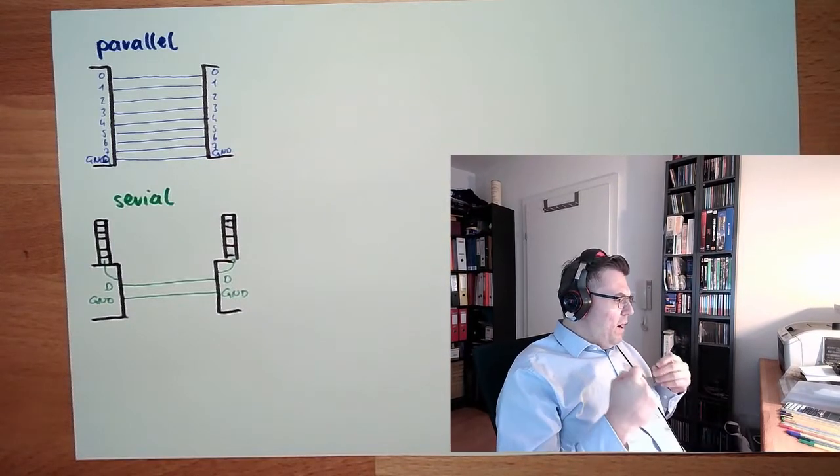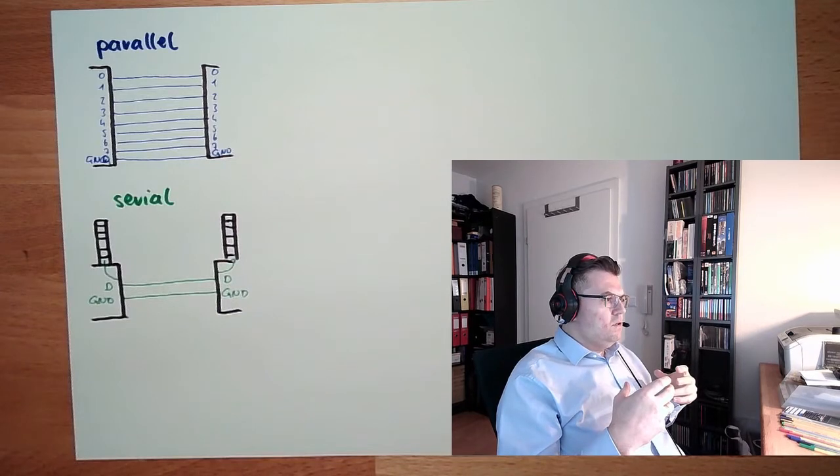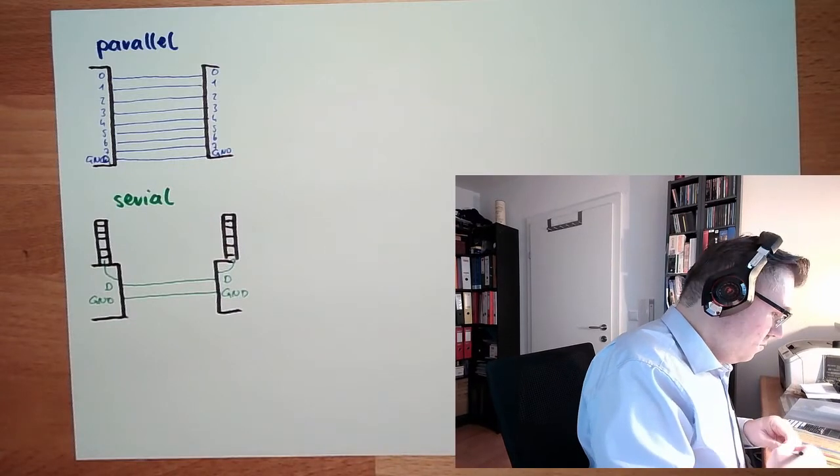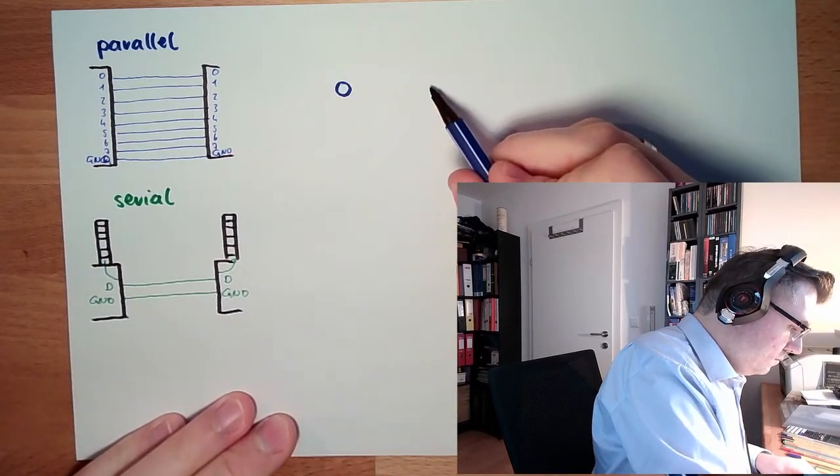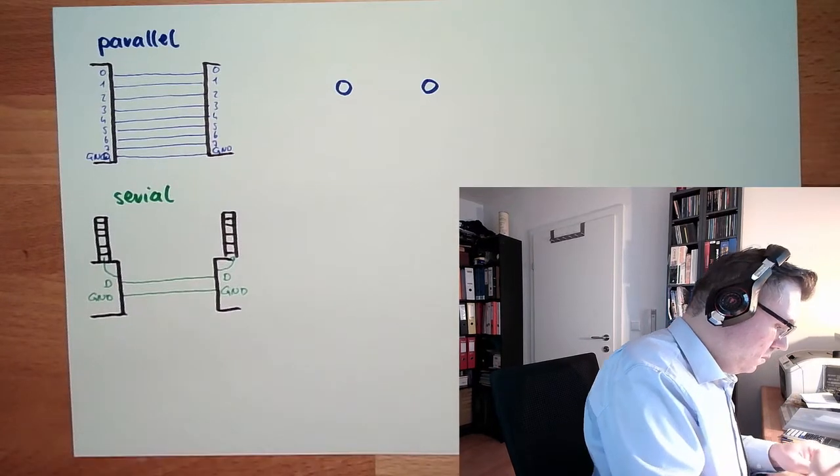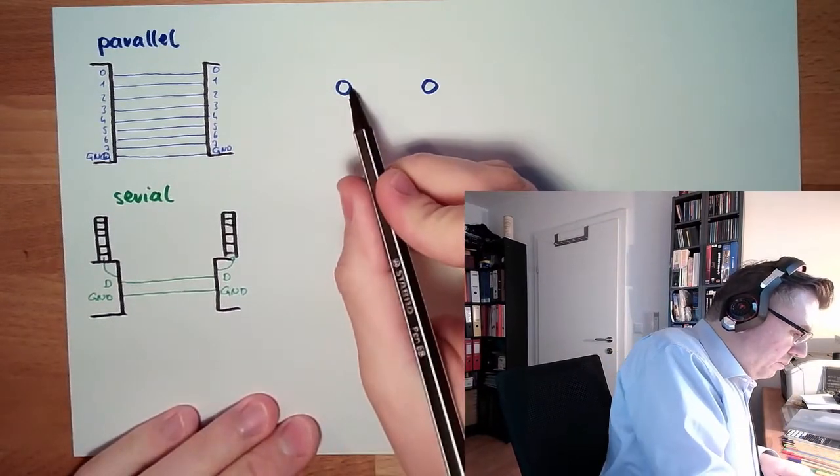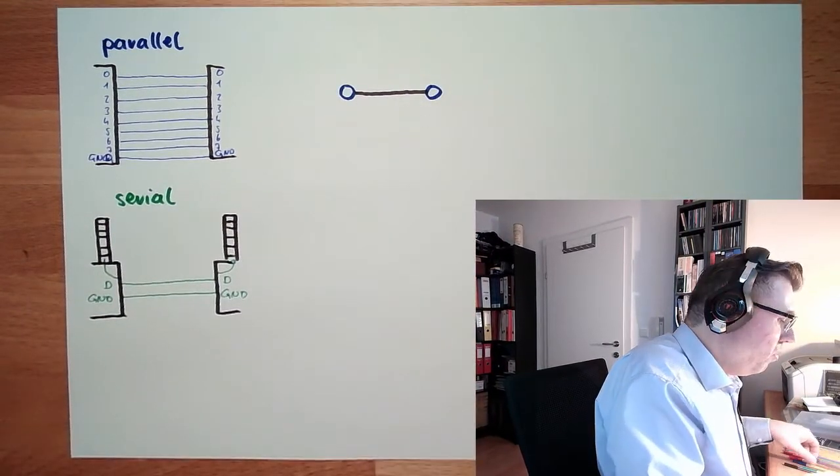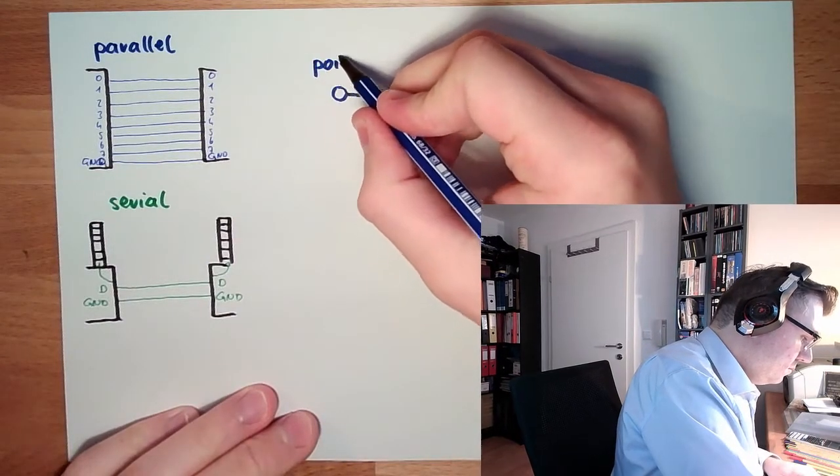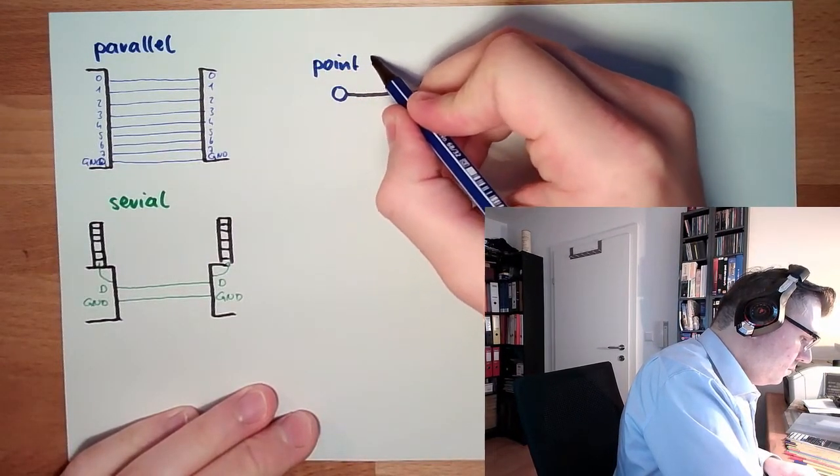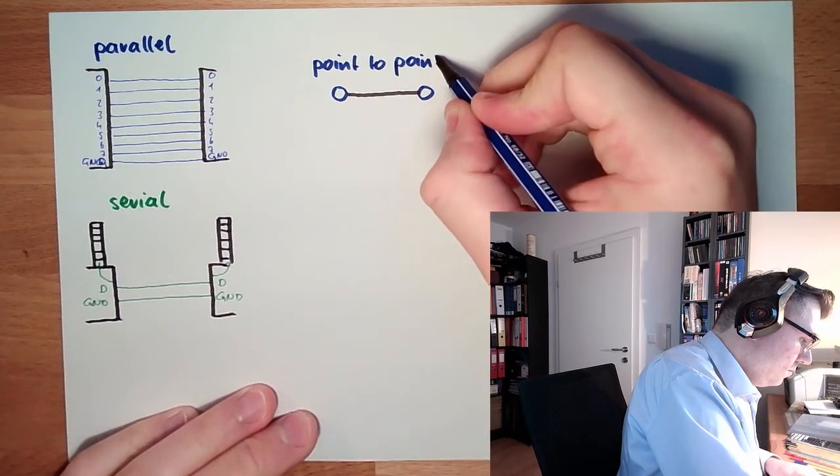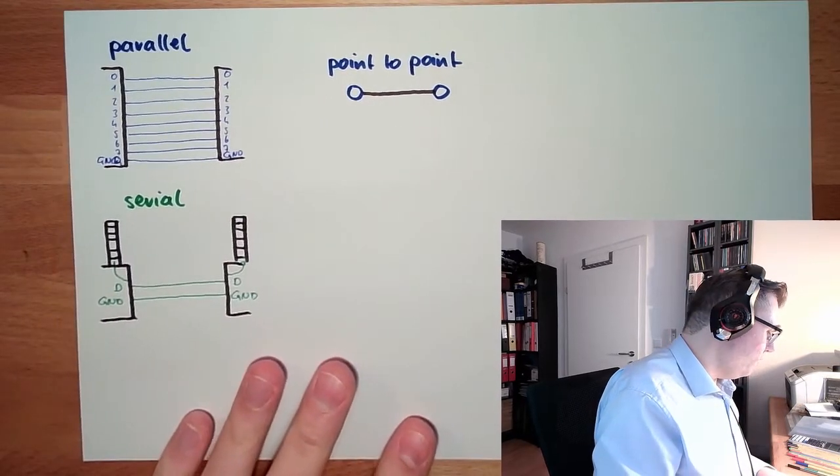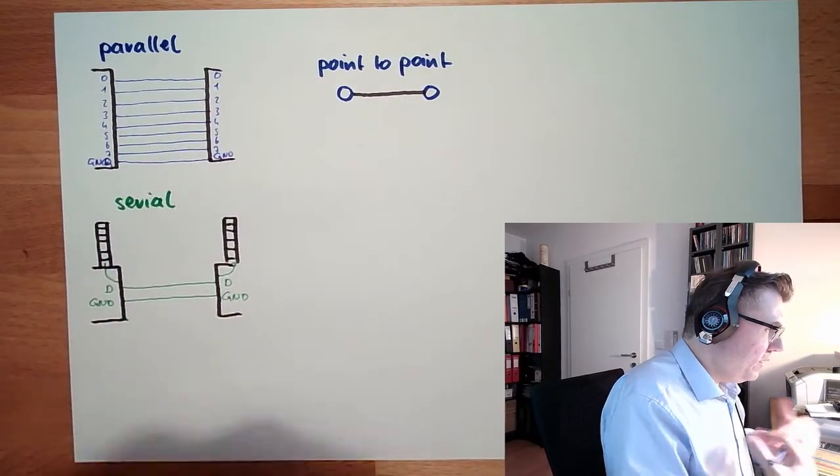I also said something about bus, just mentioned bus system. What is bus system? Basically, if two things are talking, we can put a cable between those two systems and they are talking to each other. So this here is called point to point. Point to point communication. Two things talking to each other have one cable in between and they talk to each other.